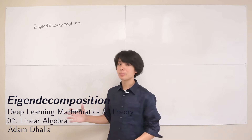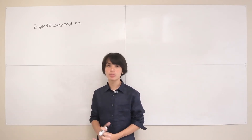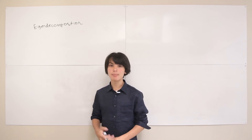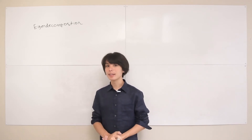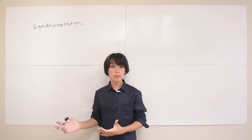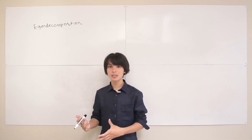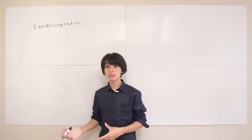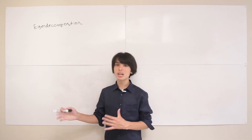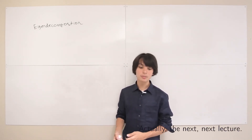In this lecture we're going to be talking about eigendecomposition, which is basically how we can decompose some matrix A into three component matrices that multiply to get back A. It's important for two main reasons: it shows up all the time in machine learning applications of linear algebra, and it's also an important prerequisite to understanding singular value decomposition, which is a general case for eigendecomposition that we'll learn about in the next lecture.